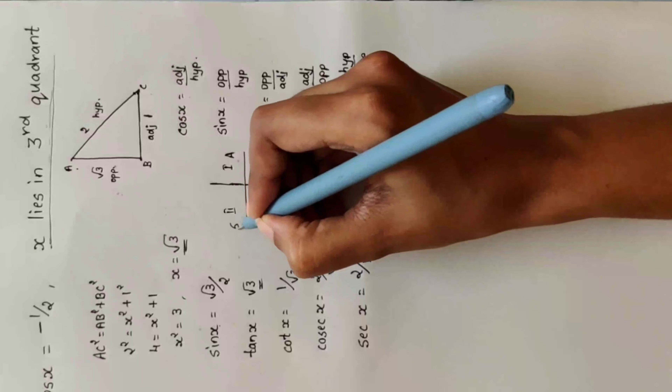In this triangle, name it as A, B, and C. This is the opposite side, this is the adjacent side, and this is the hypotenuse. Cot x = adjacent divided by opposite. So adjacent is 3 and opposite is 4. Now find the hypotenuse using the Pythagorean theorem.